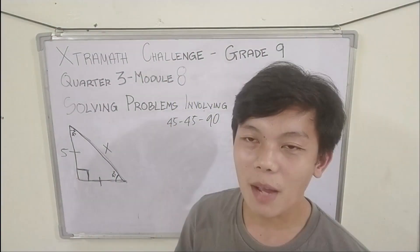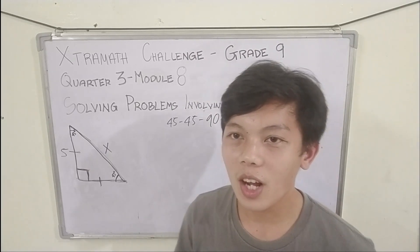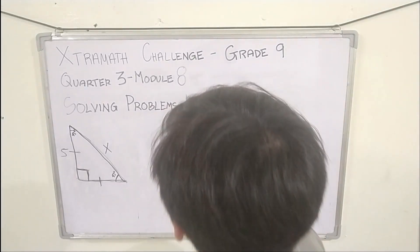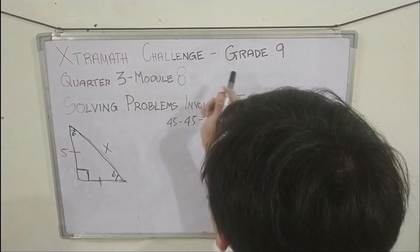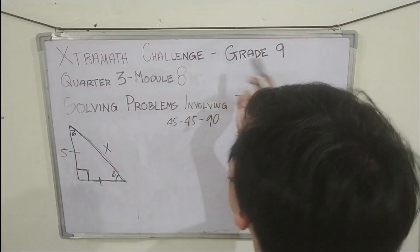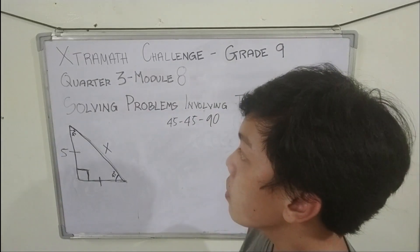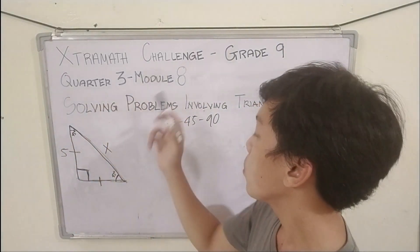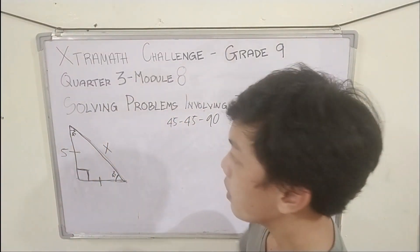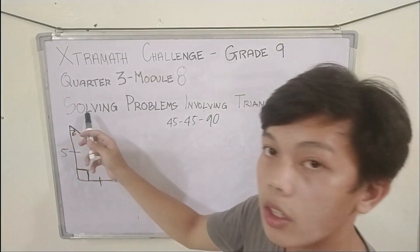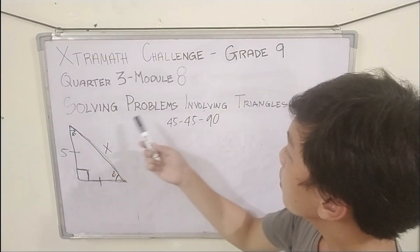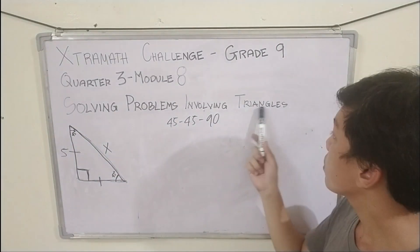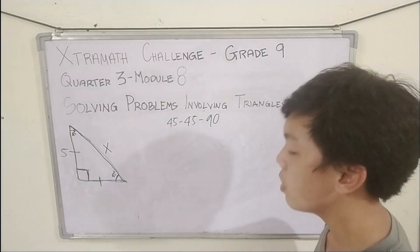Hi Habiters! I'm Habitur Owen on our Extra Math Challenge. Our Extra Math Challenge is all about grade 9 lessons in quarter 3 module 8, and it is all about solving problems involving triangles.